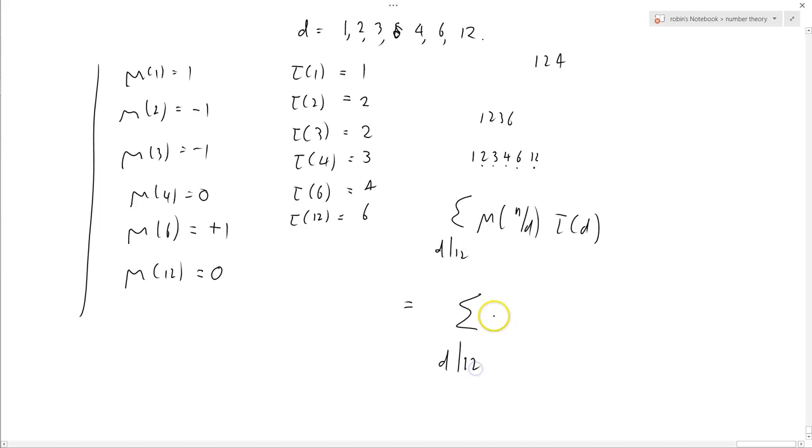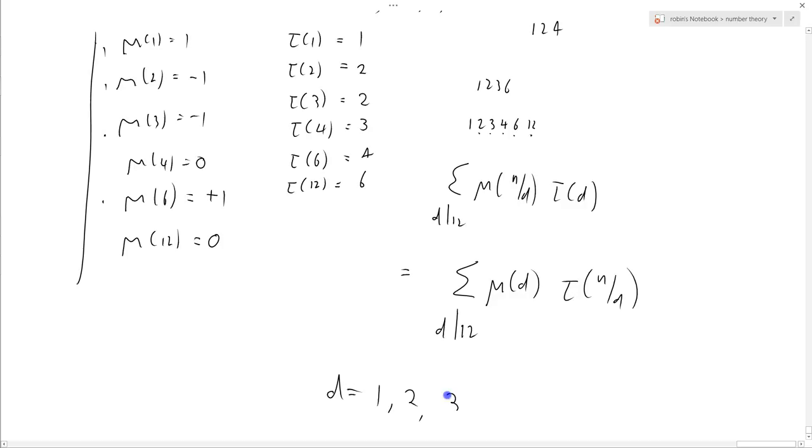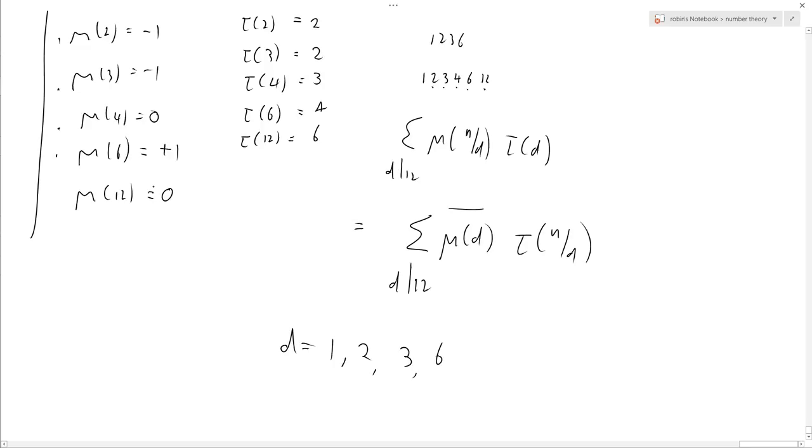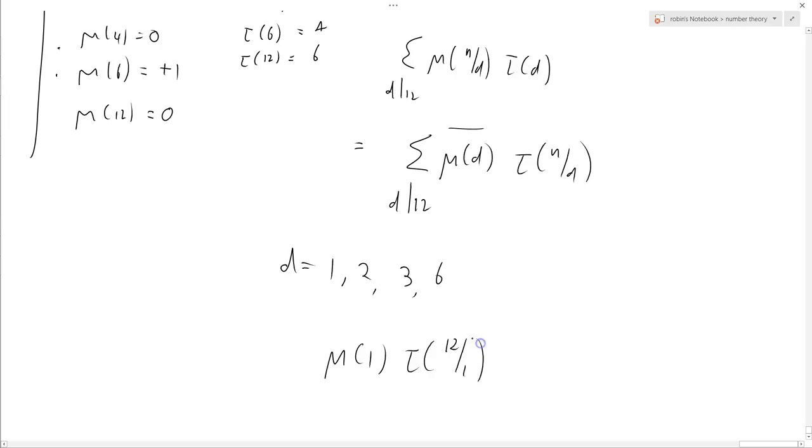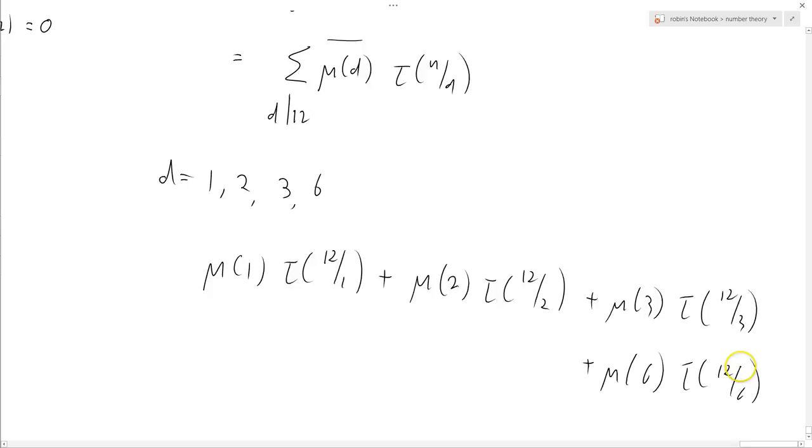Let me write this out in a slightly different way: sum μ(d) divides 12 of μ(d)τ(n/d). And that way I can just concentrate on the non-zero ones. Okay, so I'm going to have d equals 1, 2, 3, 4 has disappeared, 6, and 12 has gone. Yeah, because if I were to put d equals 12 in this formula, μ(12) equals 0, so I'll just forget that term. So what I've got is μ(1)τ(12/1) plus μ(2)τ(12/2) plus μ(3)τ(12/3) plus μ(6)τ(12/6). I've got this here.